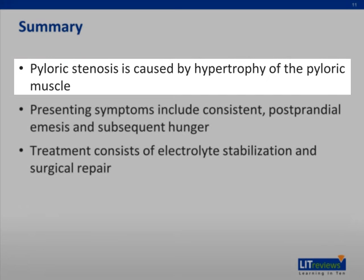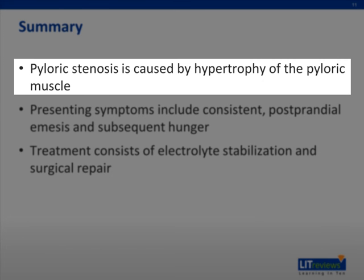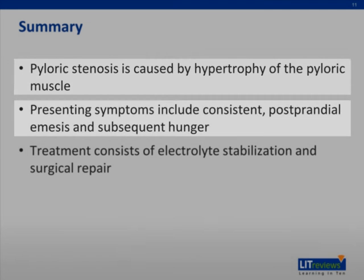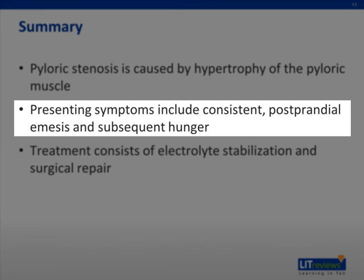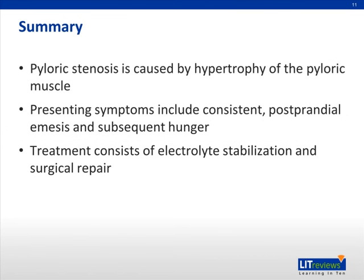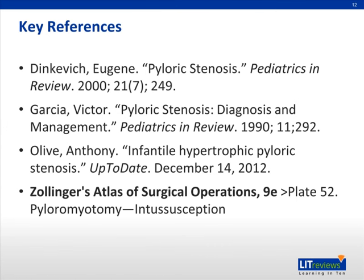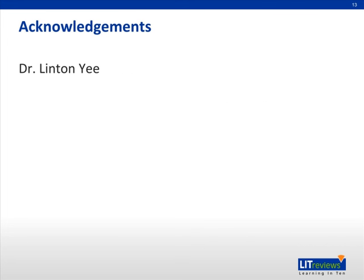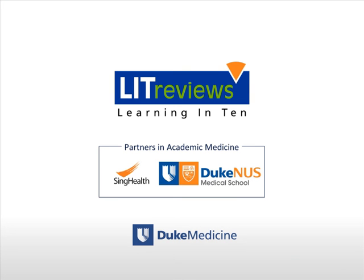In summary, pyloric stenosis is caused by hypertrophy of the pyloric muscle. Presenting symptoms include consistent postprandial emesis and subsequent hunger. Treatment consists of electrolyte stabilization and surgical repair. Thank you.